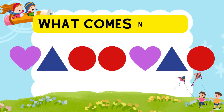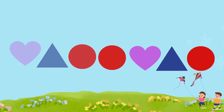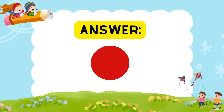What comes next? Heart, triangle, circle, circle. Heart, triangle, circle. What comes next? 3, 2, 1. Circle. Let's go.